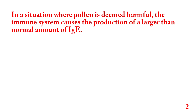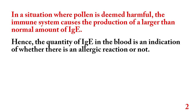In a situation where pollen is deemed harmful, the immune system causes the production of a larger than normal amount of IgE. Hence, the quantity of IgE in the blood is an indication of whether there is an allergic reaction or not.